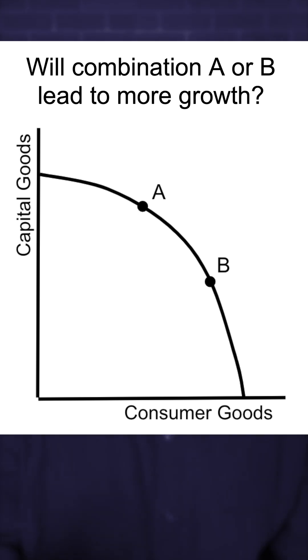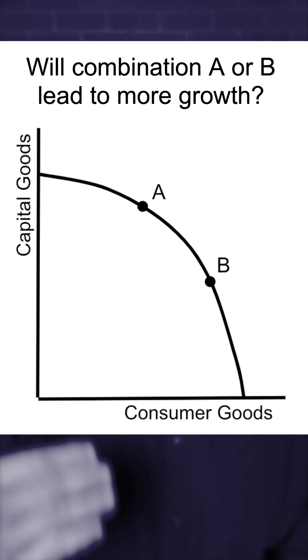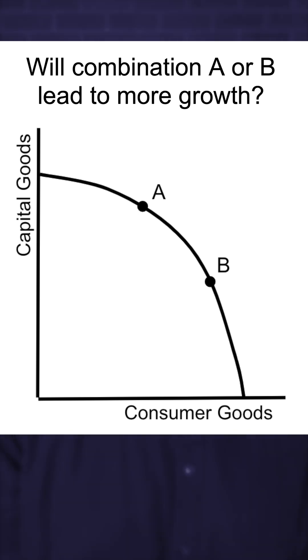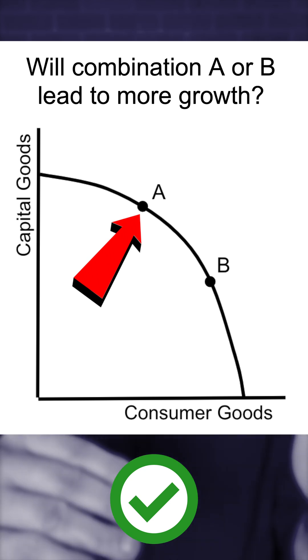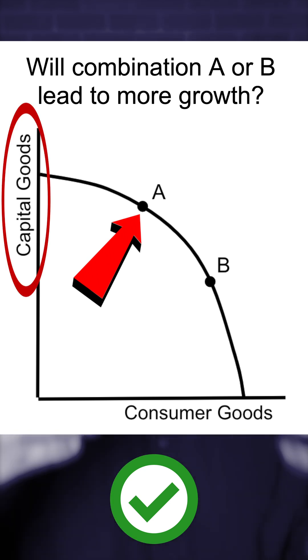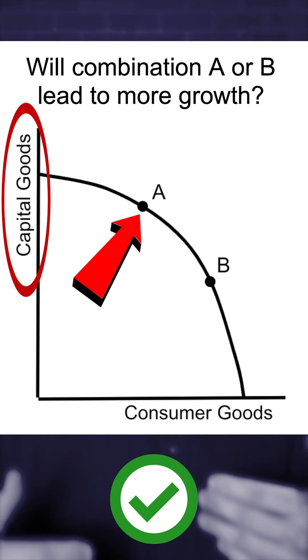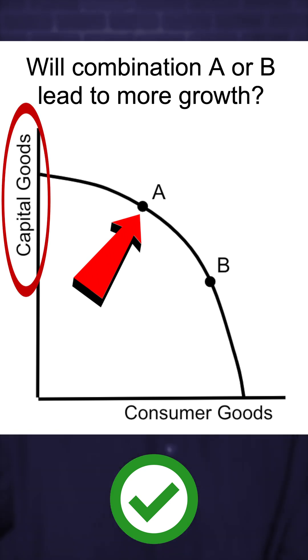The third one is a question about capital and how that's going to lead to more economic growth in the future. For example, your teacher might give you a production possibilities curve with two points and say which one of these points, A or B, will lead to more economic growth. The answer is A because A means we're producing more capital, and since capital is a resource to produce more stuff, that's going to lead to more economic growth in the future.